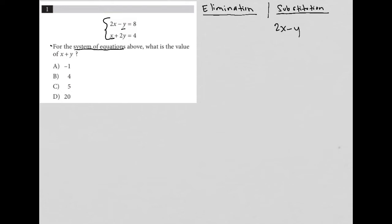So if I have this 2x minus y equals 8, I can subtract 2x from both sides here, leaving me with negative y equals negative 2x plus 8. I can then multiply the entire equation by negative 1, leaving me with positive y equals 2x minus 8. And now that I know what y equals...